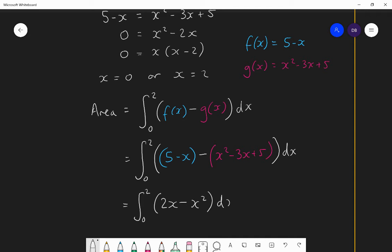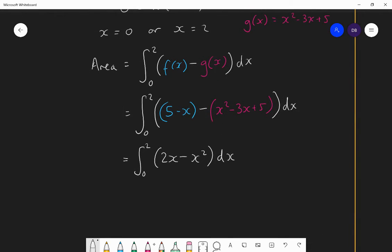So that's a much simpler expression to integrate than if I had to integrate 5 minus x separately and then integrate the quadratic x squared minus 3x plus 5 separately, and then evaluate both of those with the substituting limits and then subtract. This is much easier to do in one. So that's why I prefer this process to evaluating integrals separately and then subtracting. So let's integrate. 2x becomes 2x squared divided by 2, which is 1x squared. Minus x squared becomes minus x cubed divided by 3, which is minus a third x cubed.